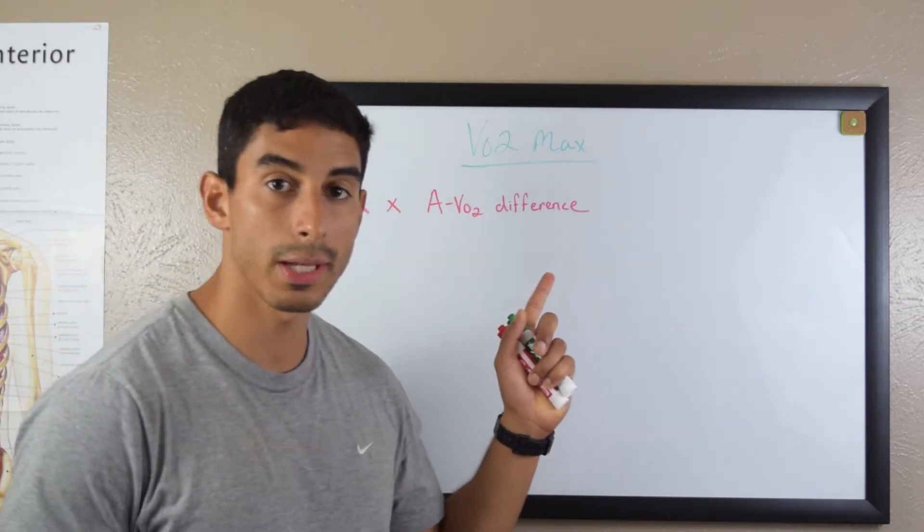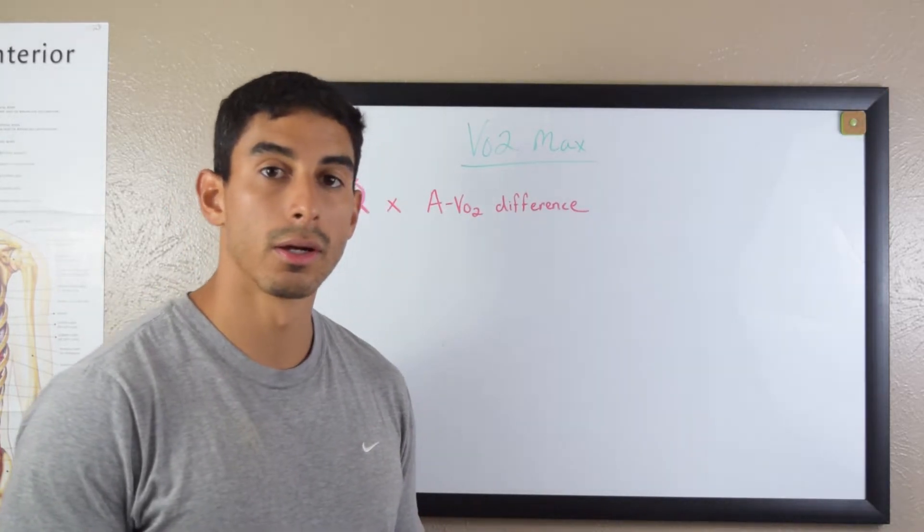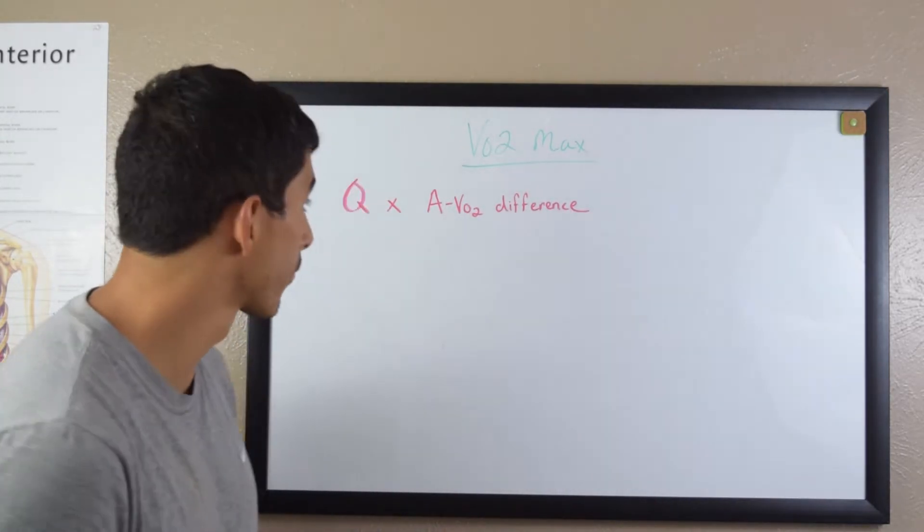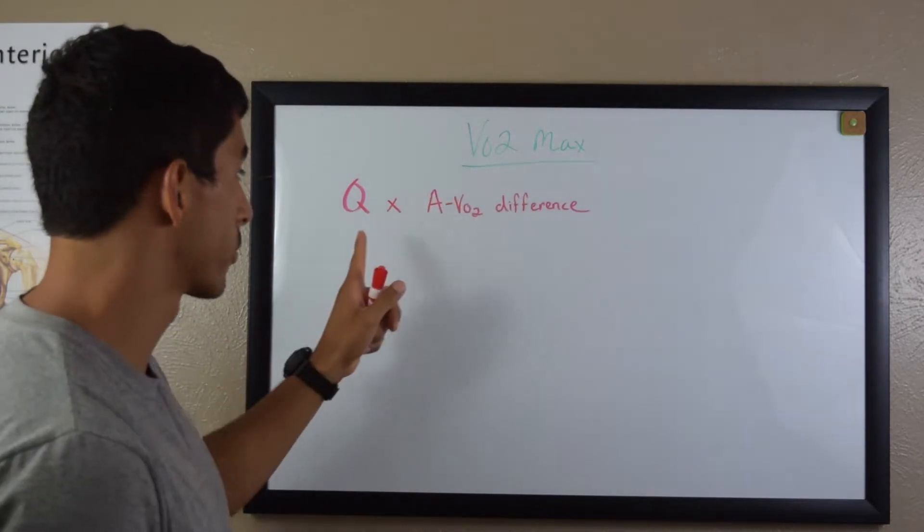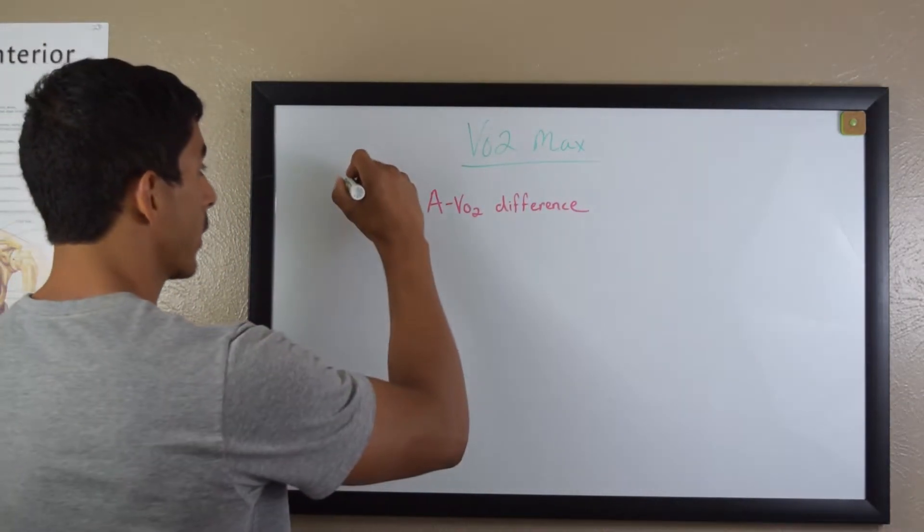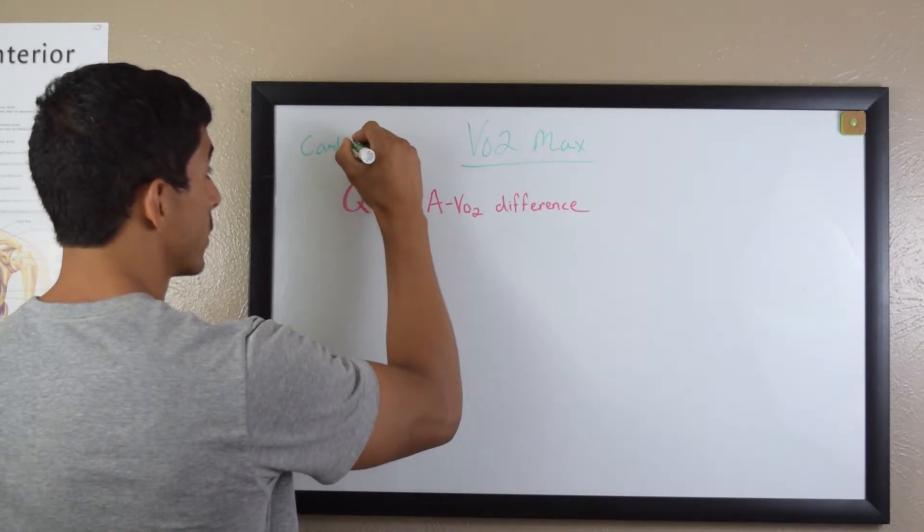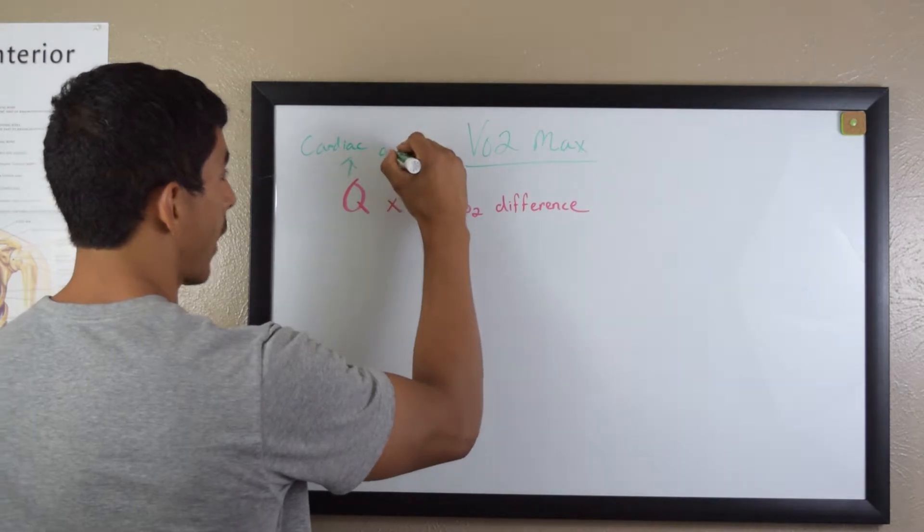Here's the equation for VO2 max and I want to break this down a little bit to give you a better understanding of what these components mean. For VO2 max, you're going to have Q which is cardiac output. If you see Q, just know that it means cardiac output.